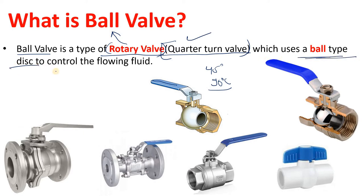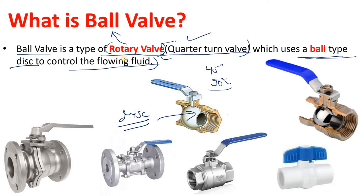In the case of a ball valve, the disc will be a type of ball — the disc will be in the shape of a ball. So to control the flowing fluid in the ball valve, its disc is like a ball, which is used to control the flowing fluid.